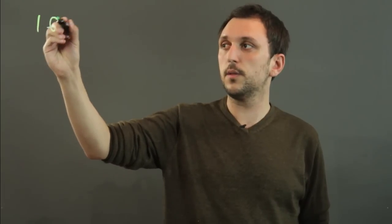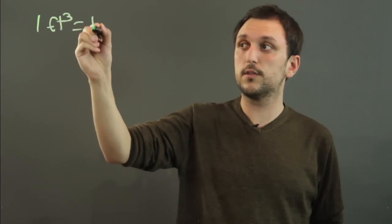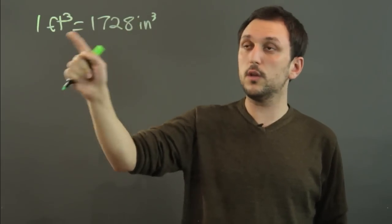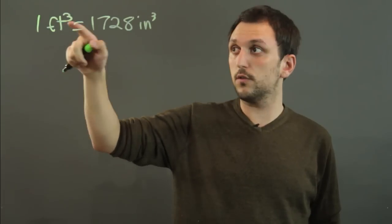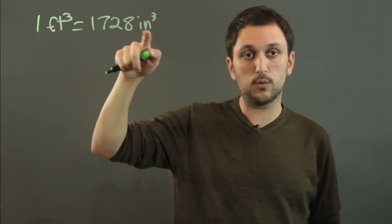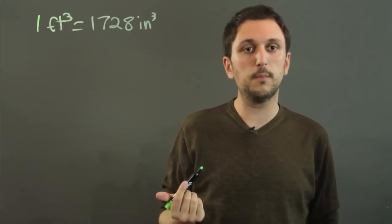The first thing we have to do is figure out how to convert cubic feet to cubic inches, because you'll need to be dealing with inches if you're trying to measure in inches. One cubic foot equals 1728 cubic inches, and the way you figure that out is one foot equals 12 inches, so one cubic foot equals 12 to the third cubic inches, and 12 to the third is 1728.